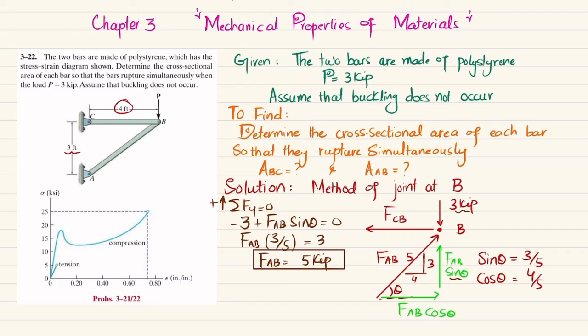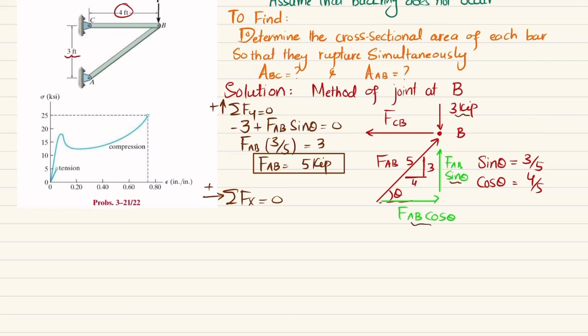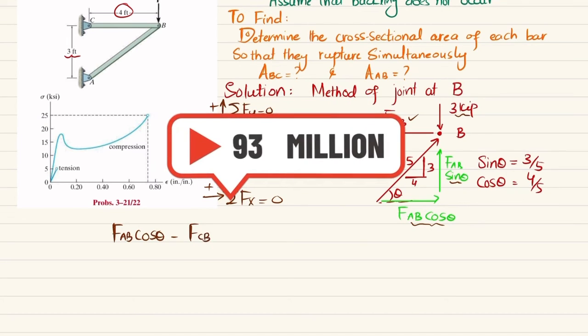Now we will find FCB by using another equation of equilibrium that sum of all forces along x direction must be equal to 0 and force towards right will be taken as positive. So FAB cos theta minus FCB is equal to 0.